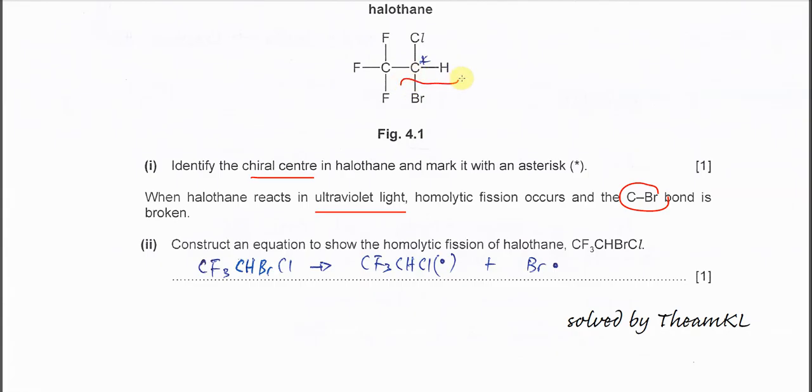Breaking homolytically means one electron will move to the carbon and another electron will move to the bromine, forming two radicals. The radical means the dot is on this carbon, but because of formatting issues, you just put the dot on the right-hand side. You also show the bromine radical.